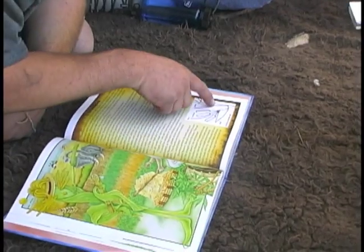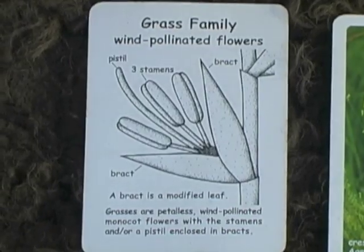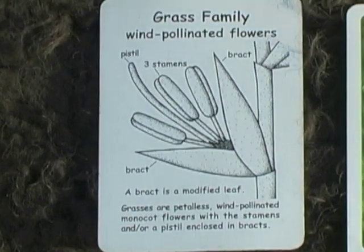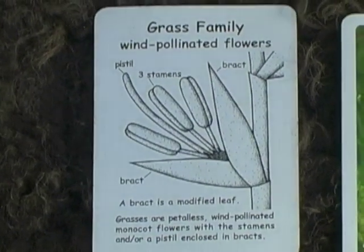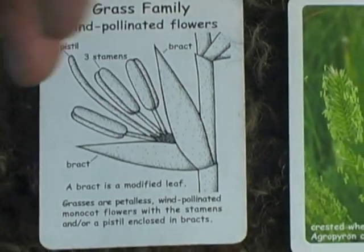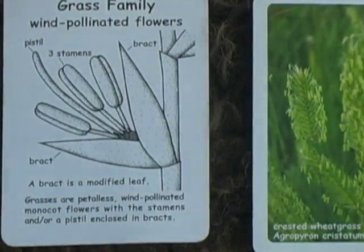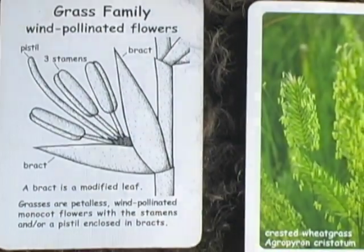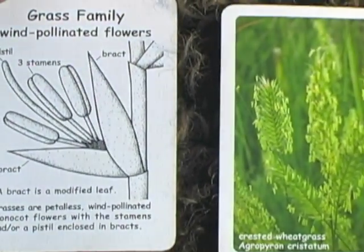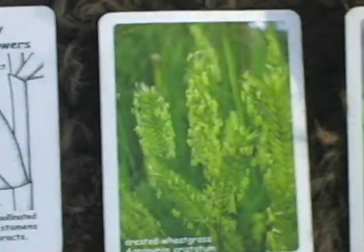You might not think of the grasses as being flowers because they don't have the showy petals, but that's because they're wind-pollinated. They don't depend on insects to pollinate them, so they don't waste the energy producing petals that other flowers do. But they do have stamens and pistils like other flowers. These are some samples from the grass family.